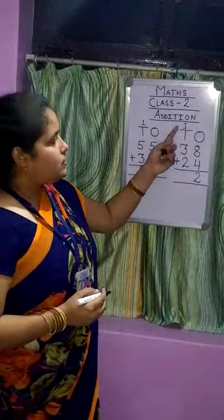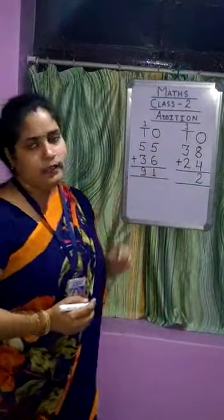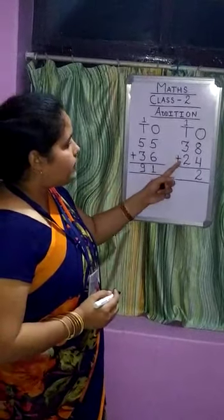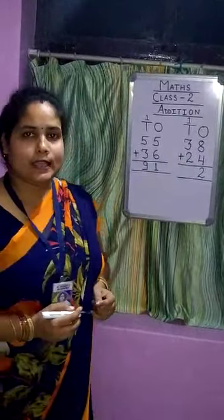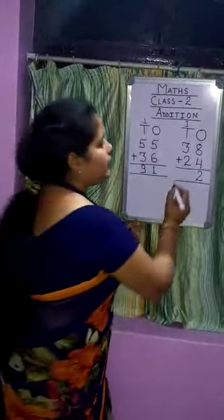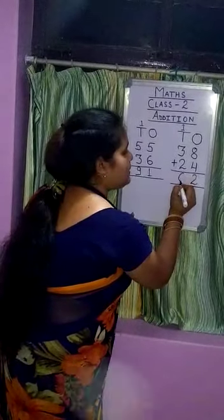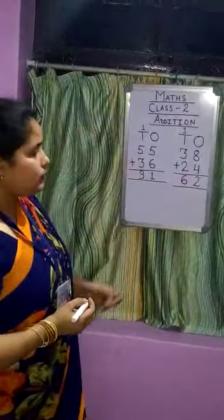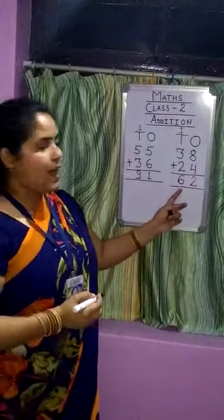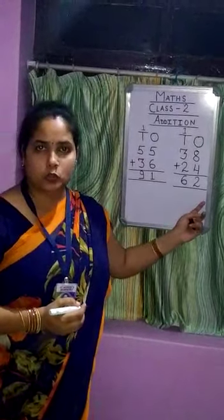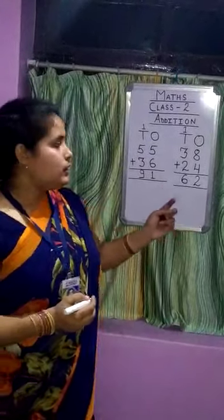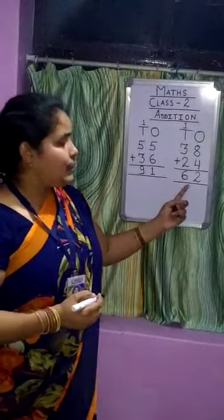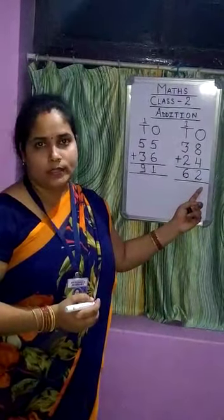Now in the tens place: 3 plus 1 equals 4, and 4 plus 2 equals 6. We write 6 in the tens place. Our answer is 62. 62 means 6 tens and 2 ones.